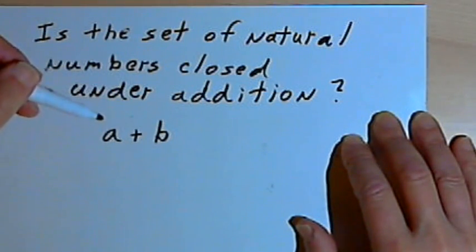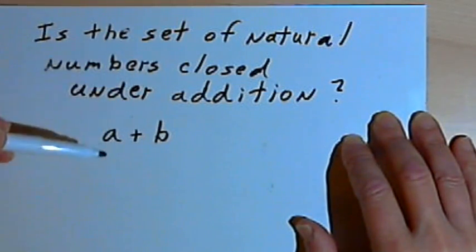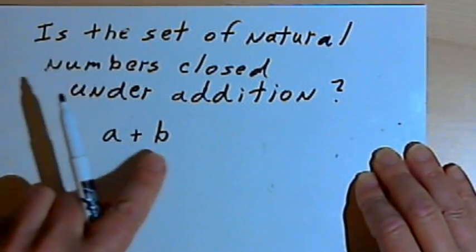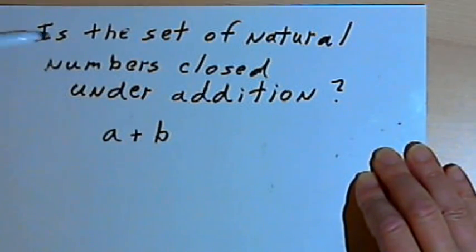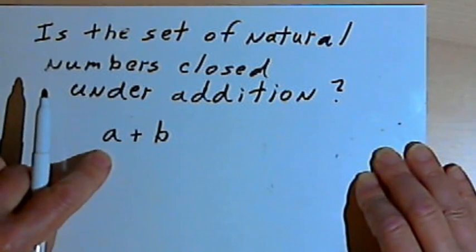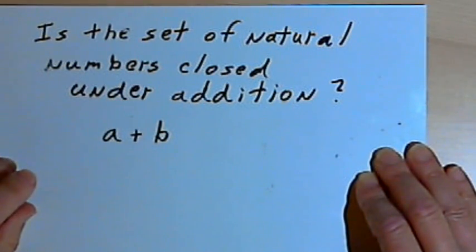If I can't, then the set is not closed. I had to go outside of the set to get my answer. Okay, so to go back to the specific question, is the set of natural numbers closed under addition? I can think of that this way. I've got two numbers, A and B, and they're natural numbers. I start with one of them.